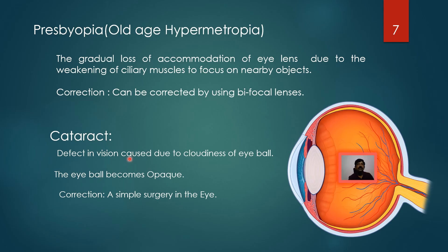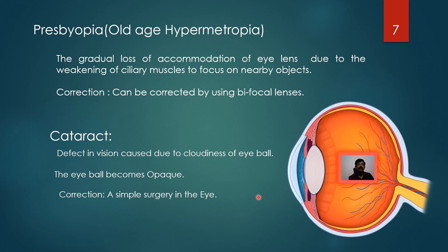Let us discuss the last eye defect — cataract. As a person grows older, a cloudy layer is formed on the eye lens, and the lens becomes opaque instead of transparent. This defect can be corrected by a simple surgery in which the natural eye lens is replaced with an artificial lens called an IOL — intraocular lens. It is a laser surgery and is a simple procedure to correct cataract. These are the four eye defects and their corrections.